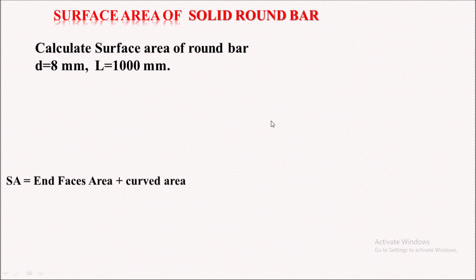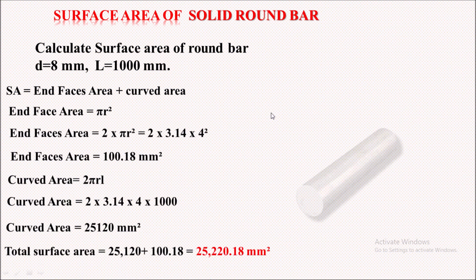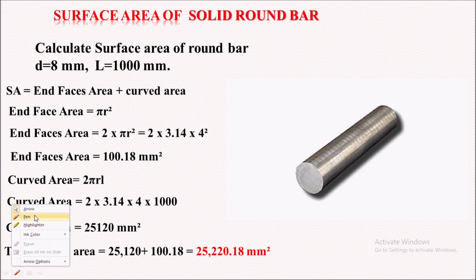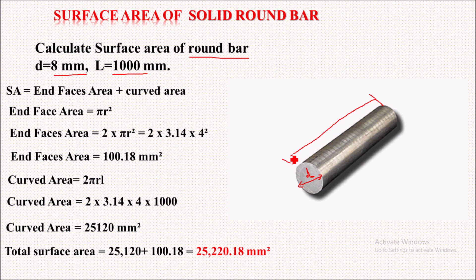Now let us see how to calculate the surface area of a solid round bar with one example. Calculate the surface area of a round bar whose diameter is 8 mm and the length is 1000 mm. We will now calculate the surface area of this solid round bar.